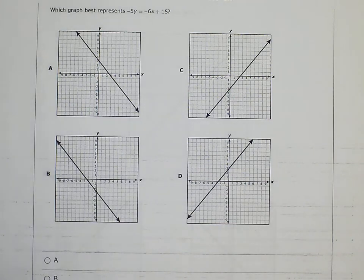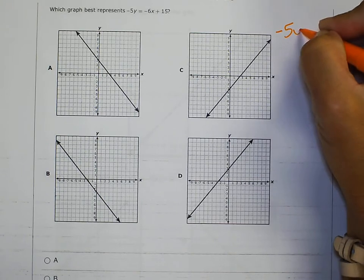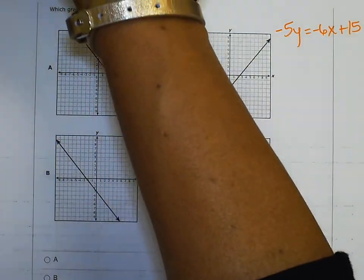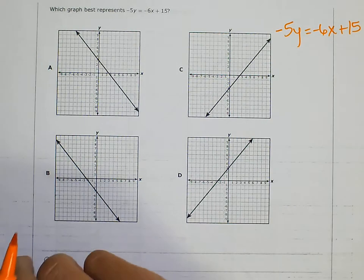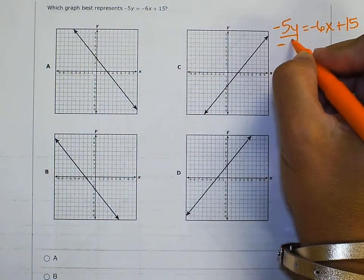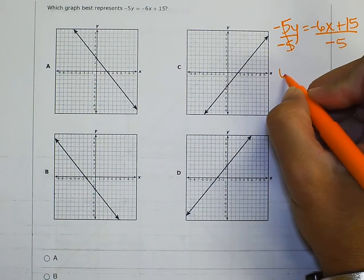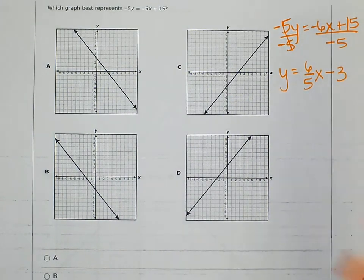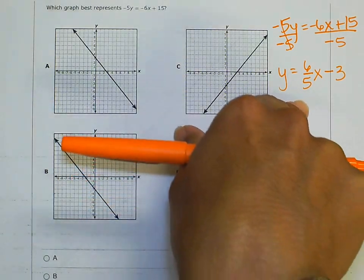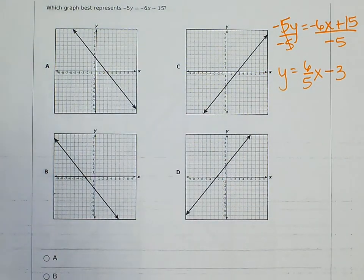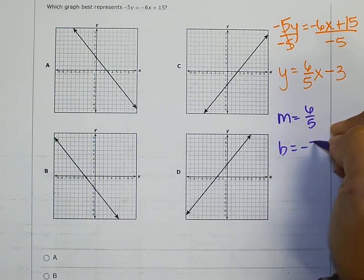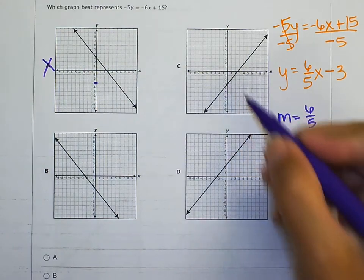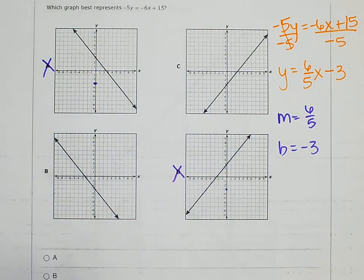Number 6: Which graph best represents −5y = −6x + 15? Before we can graph, we need the slope and y-intercept, so I put this into slope-intercept form by solving for y. Dividing everything by −5: y = (−6/−5)x + 15/(−5), which gives y = (6/5)x − 3. My slope is 6/5 and my y-intercept is −3. I'll look for a graph with a y-intercept at −3 and eliminate any that don't cross there. That narrows it down to two options.